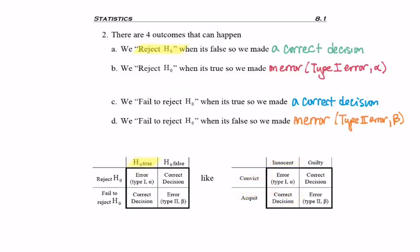Or, for example, a guilty person. If they're convicted, that was the correct decision to make. Not that we really know if they were guilty or not. But if they were guilty and we acquit them and kind of let them go, then we've made an error. But it's not considered as serious an error as a Type I error.